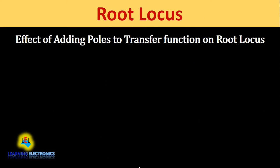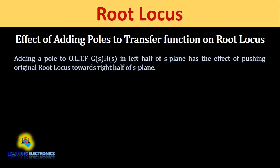First we will study the effect of adding poles to the transfer function on the root locus. Adding a pole to the open loop transfer function G·H in the left half of the S plane has the effect of pushing the original root locus towards the right hand side of the S plane.